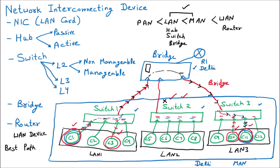Now let us suppose we are having nearby cities also. There is Router 2, the router of Gurgaon — which is today called Gurugram. There is Router 3, which is of Noida, and Router 4, which is of Ghaziabad.